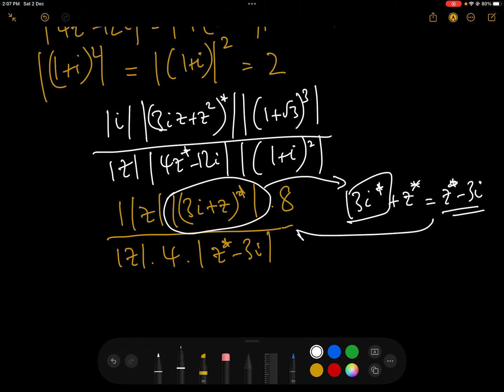So now we can plonk that back in here. We can cancel out, sorry, I've missed a 2 out here, haven't I? Yes, sorry, 1 plus i squared is 2, so we need that. So we can cancel out the 8, the 4, and the 2.